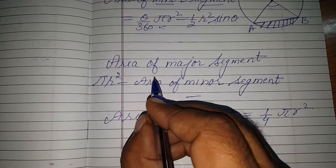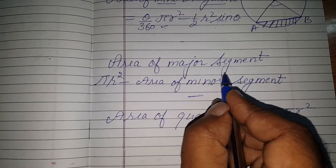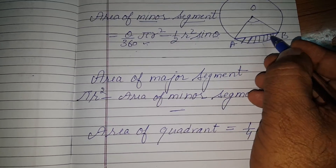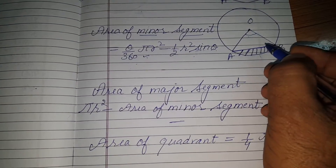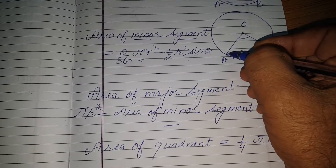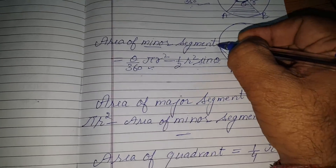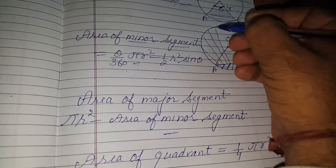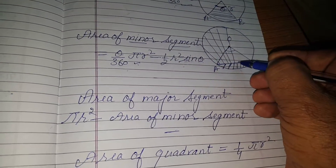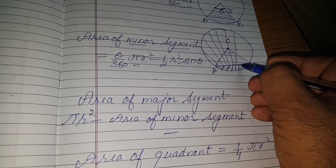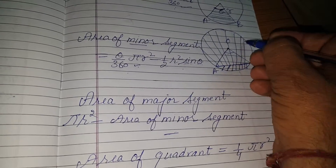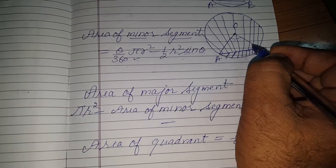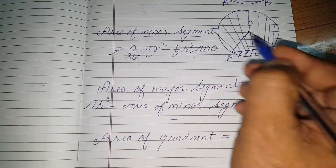Next is the area of the major segment. Once you have removed the minor segment from the circle, the rest of the circle that remains is the major segment. So the major segment is the area of the circle minus the minor segment.